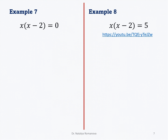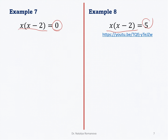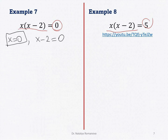Examples 7 and 8 both present quadratic equations where the left side is already in factored form, but the right side of example 7 has 0 while example 8 has 5. For example 7, we apply the zero product rule directly: x equals 0 or x minus 2 equals 0, giving x equals 2. The answer is {0, 2}.